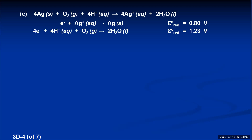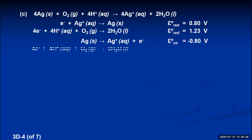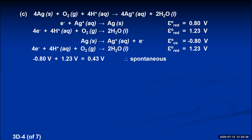To make these add up to the given reaction, we leave the oxygen reaction exactly as written — hydrogen ions and oxygen are already the reactants and water is the product. The silver half reaction is unfortunately written incorrectly because we need elemental silver as a reactant and silver ions as a product. So reversing the silver reduction to make it an oxidation gives a potential of negative 0.80. The oxygen/water reduction potential is 1.23, and adding these together gives a positive number — therefore this is a spontaneous reaction.